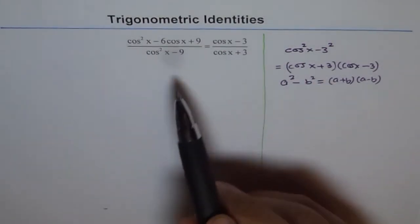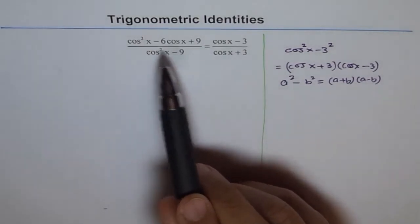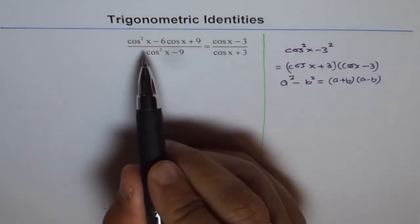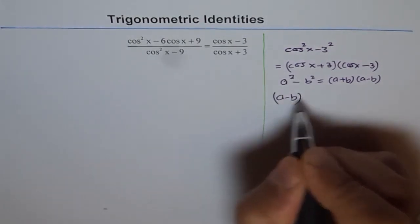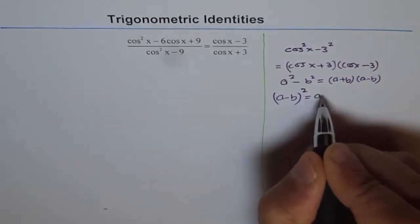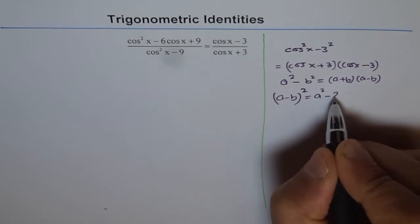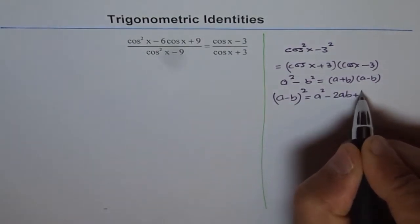And the numerator, I am looking at a perfect square, which is like if you do a minus b whole square, what do you get? We get a square minus 2ab plus b square.